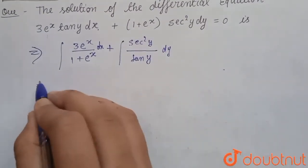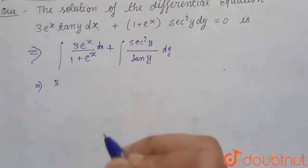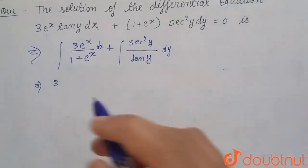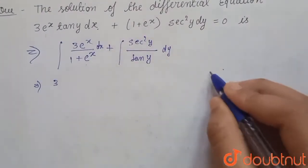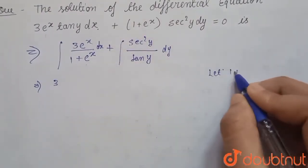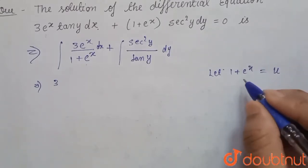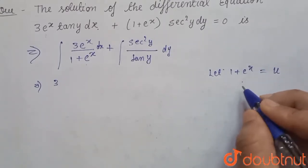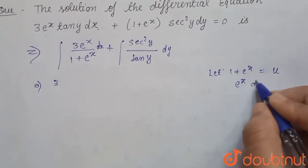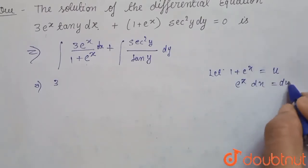So we can write this as 3, and now we have to solve this. For this, let 1 plus e^x equals u. So when we differentiate this with respect to x, we get e^x dx equals du.